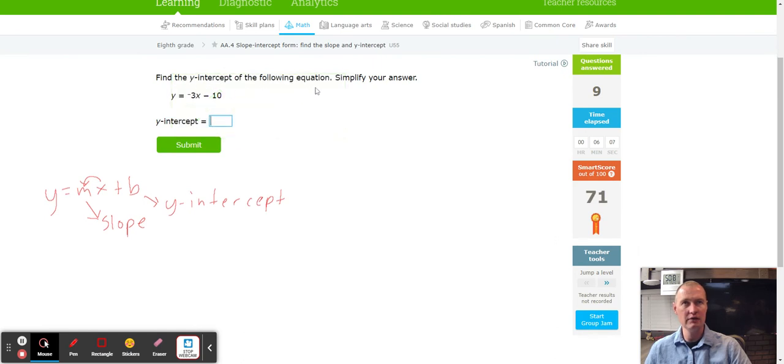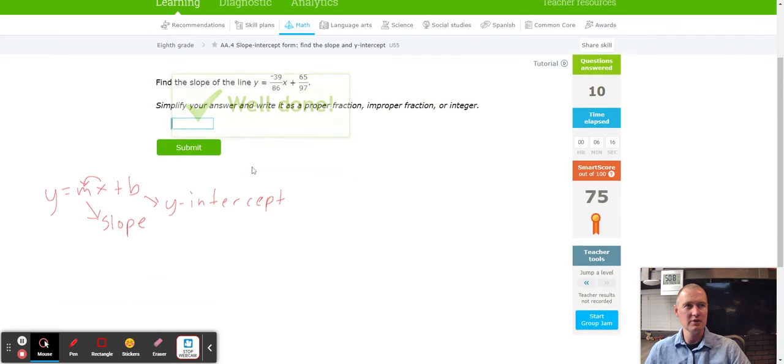Find the y-intercept of the following equation, simplify your answer. Pretty hard to simplify negative 10, but the negative 10 is the answer. Y-intercept. How are we doing? Smart score 75, rock rolling right along.